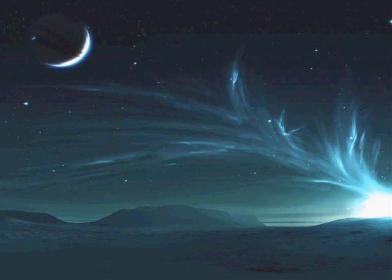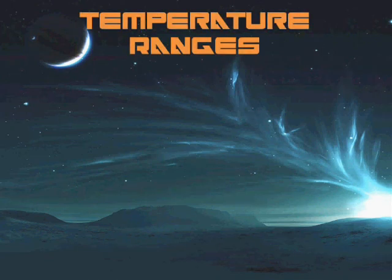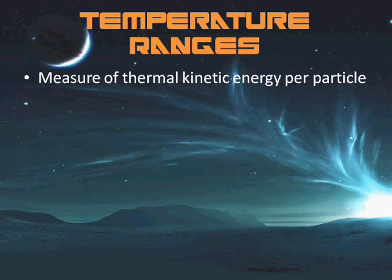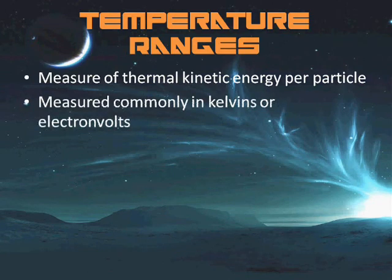Plasma temperature is a measure of the thermal kinetic energy per particle. Very high temperatures are usually needed to sustain ionization, which is a defining feature of a plasma. The degree of plasma ionization is determined by the electron temperature relative to the ionization energy. At low temperatures, ions and electrons tend to recombine into bound states or atoms, and the plasma will eventually become a gas. Plasma temperature is commonly measured in Kelvins or electron volts. Based on the relative temperatures of the electrons, ions, and neutral particles, plasmas are classified as thermal or non-thermal.